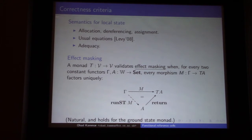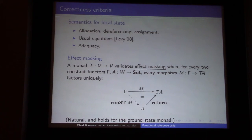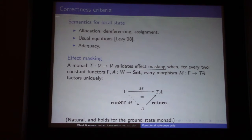Phil asks: if I think of the monad T as an input-output monad, one thing I might do is read from the input, and that would not validate the equation — meaning that particular instance does not satisfy effect masking. Correct — but reading from the input is not local; it's a global kind of effect. Good question. Please do interrupt and follow Phil's lead.